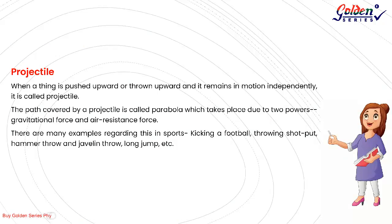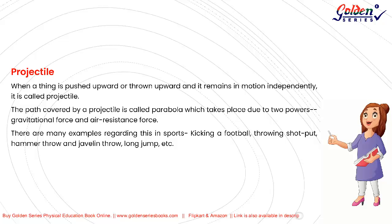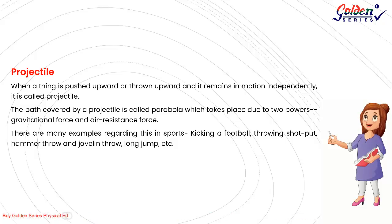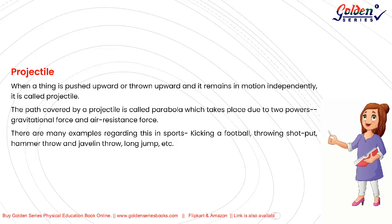Projectile. When a thing is pushed or thrown upward and remains in motion independently, it is called a projectile. The path covered by a projectile is called a parabola, which occurs due to two forces: gravitational force and air resistance. There are many examples in sports: kicking a football, throwing shot put, hammer throw, javelin throw, long jump, etc.